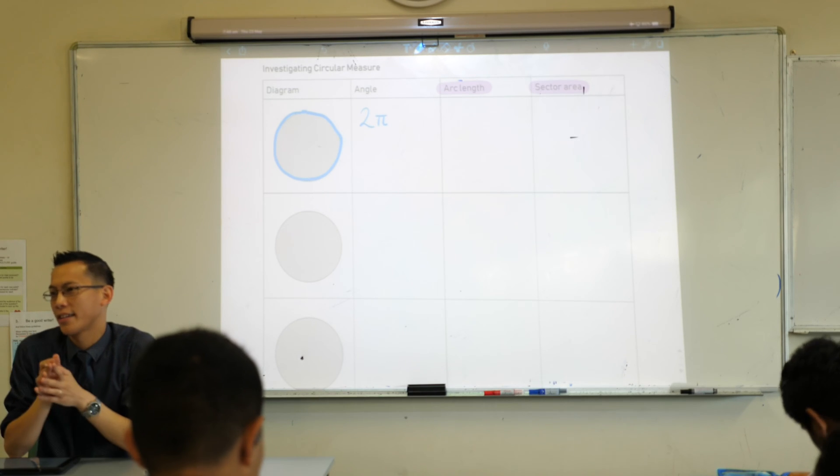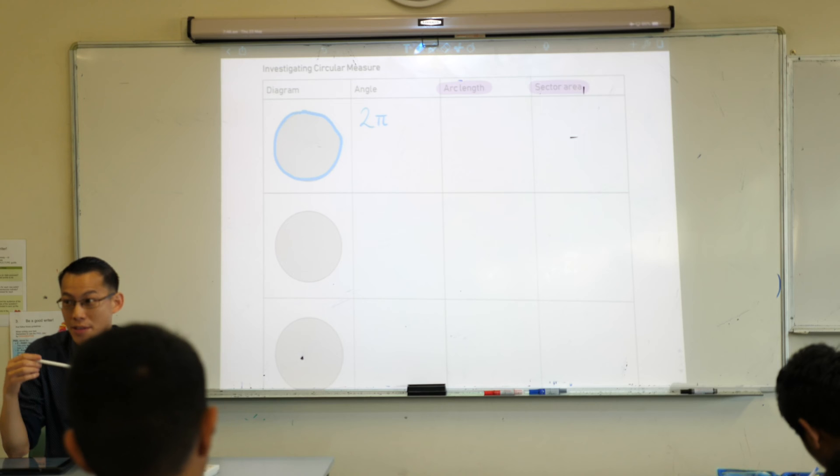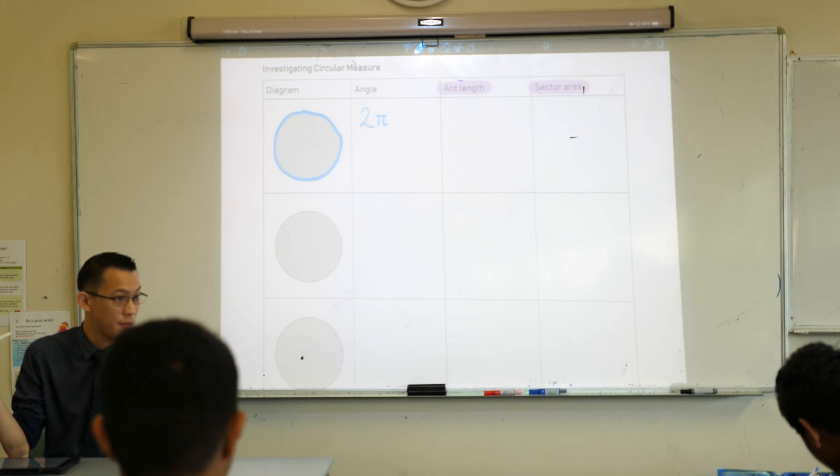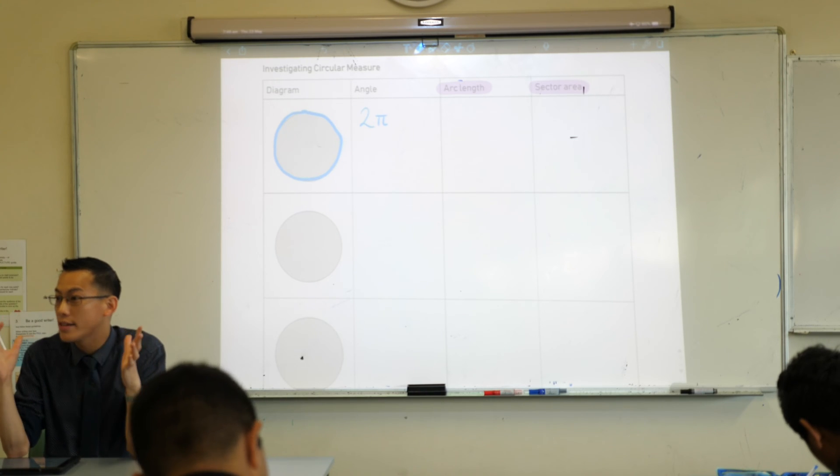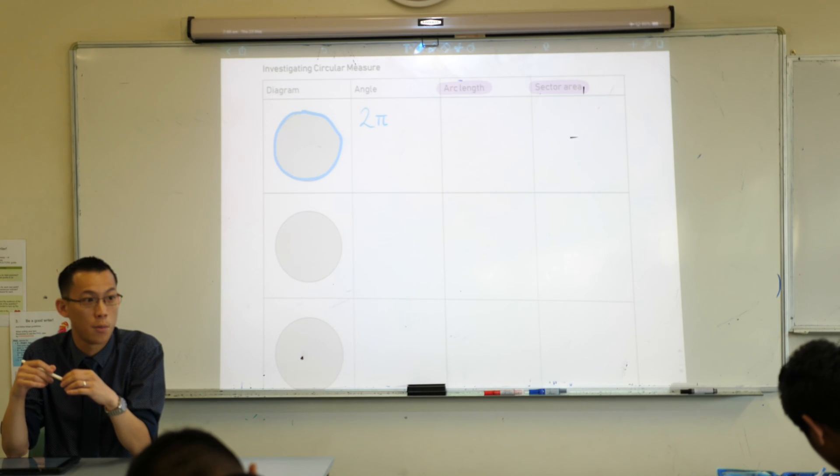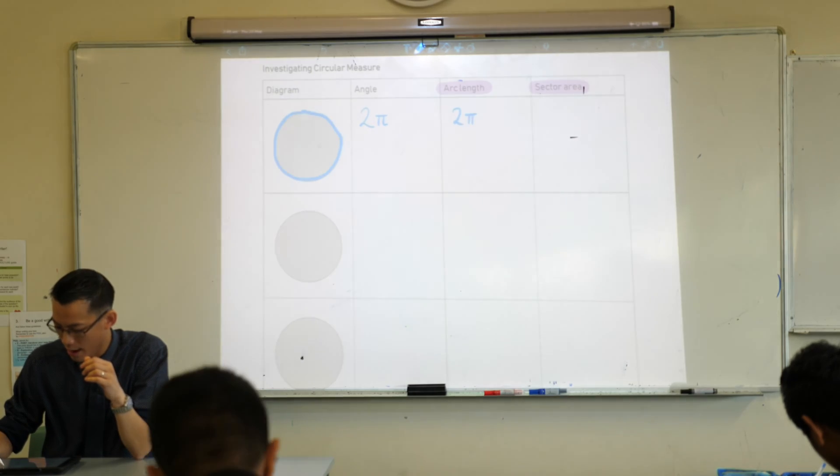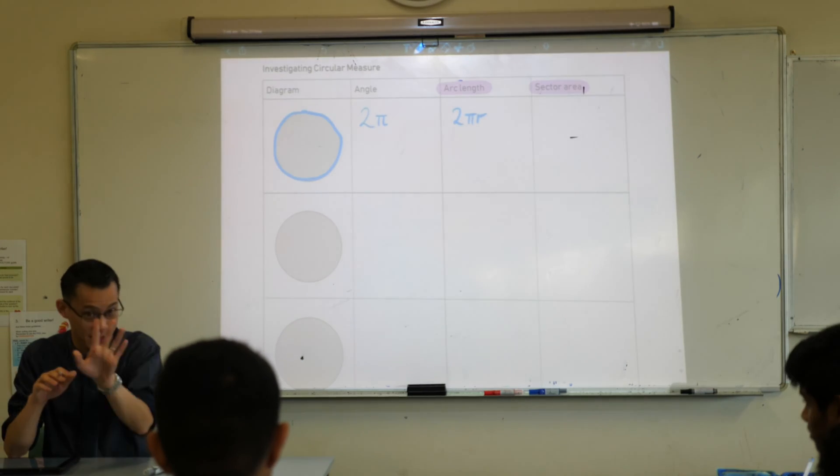Now this particular arc length, because it goes all the way around, we have a name for this. When you go all the way around the circle it's called the circumference. Very good. On a circle of any size, what is the length of the circumference? What's our formula for it? 2πr. Very good. Just hold that thought.